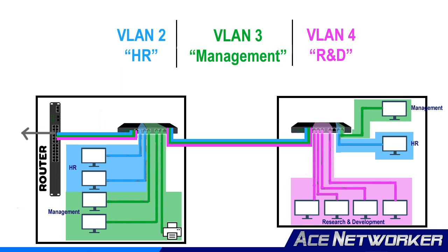This allows you to use a single physical network switch in the same building without having to go out and buy another switch every time you need another LAN segment for a different group. Every time you have a new person from a different group in the same building, you don't need to buy another switch and run a cable all the way to the next router on your network. VLANs let you divide that up inside a single switch.